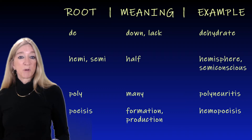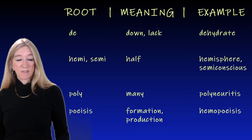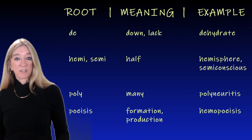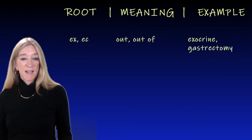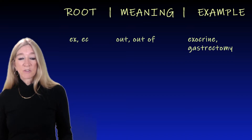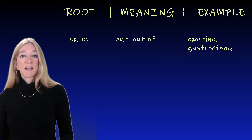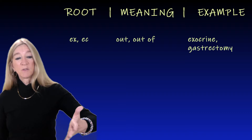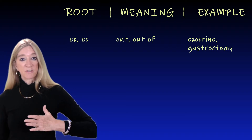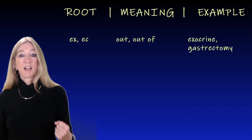The next root, 'poesis,' meaning formation or production. An example is hemopoesis, the formation and production of blood. The next roots, 'ex' and 'ec,' meaning out or out of. An example is exocrine — these are external secretions. Compare those with endocrine, which are internal secretions. Also, gastrectomy, which is cutting out the stomach.